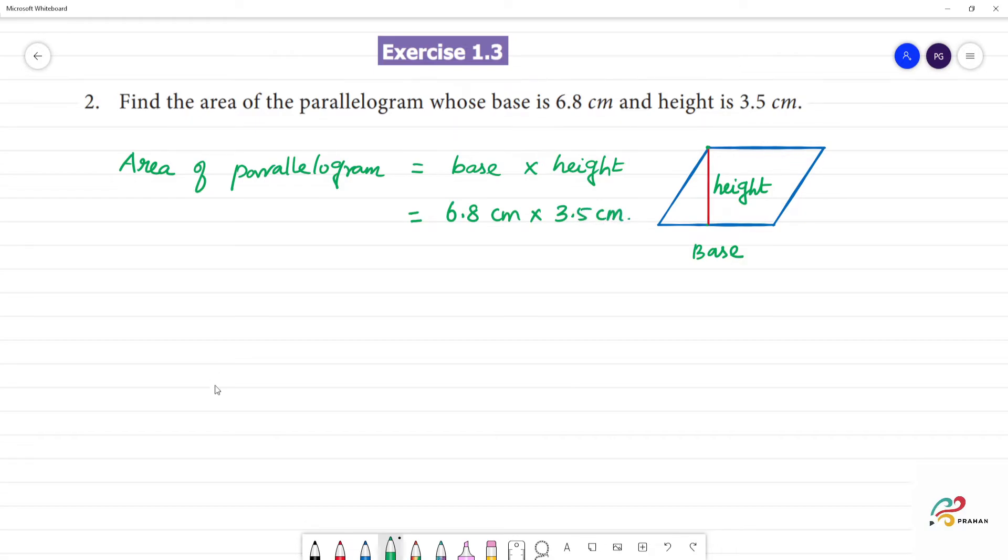Now we multiply. 6.8 multiplied by 3.5 cm. Multiplication.